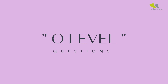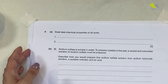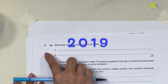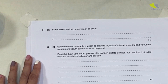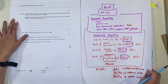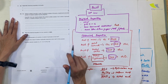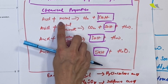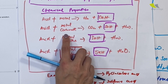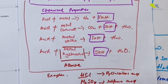Now let's look at O-level type questions. Question 9 from the 2019 paper says: 'State two chemical properties of acids.' You have five chemical properties listed, so just pick two — for example: acid reacts with some metals to give hydrogen gas and a salt; acid reacts with metal carbonate to give carbon dioxide, salt, and water. That gets you full two marks.